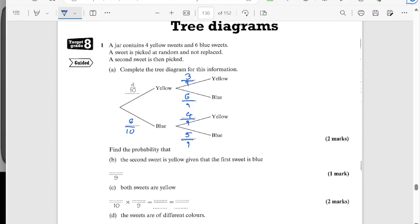So find the probability that the second sweet is yellow given that the first sweet is blue. So that's a very specific given that the first sweet is blue. So that's saying that this has happened. So the probability of it being yellow is just four out of nine. That's just this probability.